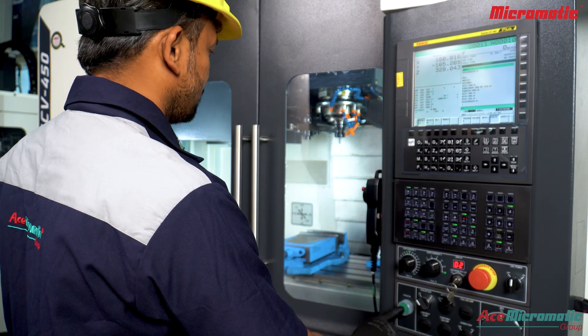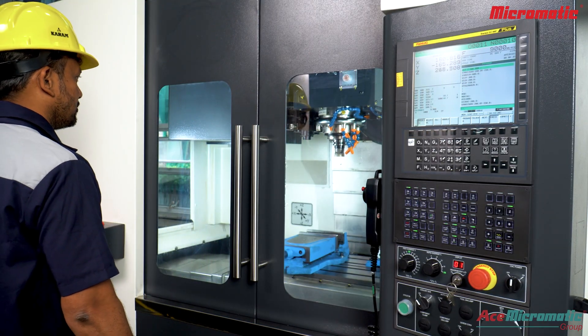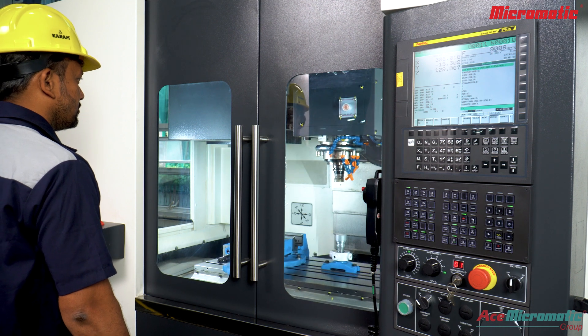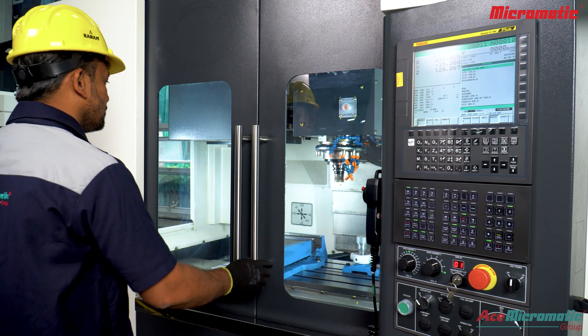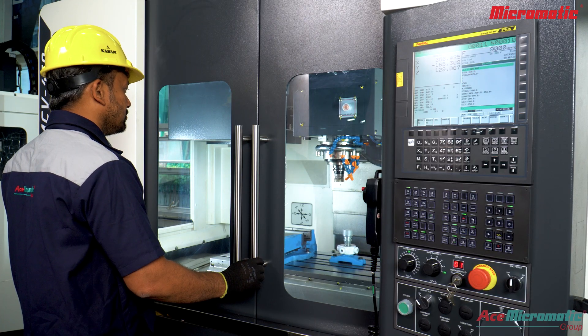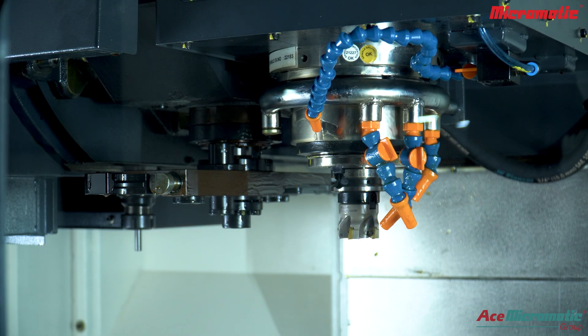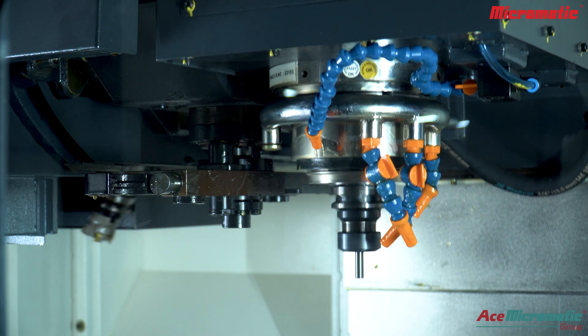Now we have switched on the machine and preparing for auto cycle running. As the machine begins its working cycle, you'll notice automatic functions such as tool changes and continuous running. These automated processes facilitate faster production and greater accuracy, minimizing the need for manual intervention.